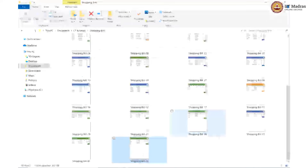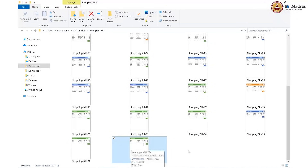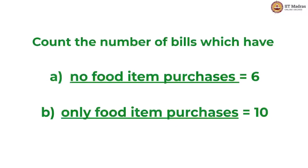We have now reached the end of the dataset — this is the last card. These are the counts we have arrived at after iterating through the shopping bill data and maintaining two separate variables: one for counting bills which have no food at all, and one for bills which have only food as all the purchased items.